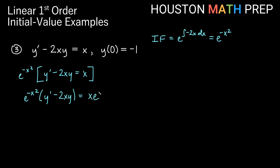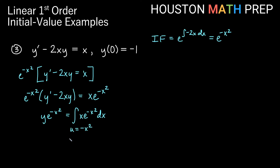On the right side we get x times e to the negative x squared. This is a product rule of y times the integrating factor, so integrating with respect to x gives y times the integrating factor on the left. For the right side we need a u-substitution: let u equal negative x squared, so du equals negative 2x dx. Solving for x dx, we get that negative one half du replaces x dx.